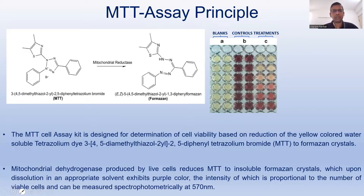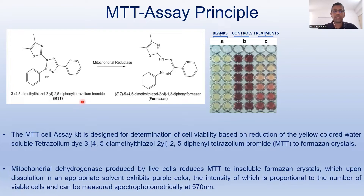Dead cells or unhealthy cells have unhealthy mitochondria, and as a result the mitochondrial enzymes will not be there to metabolize a substrate to its product. The substrate used for this assay is MTT — dimethyl thiozole diphenyl tetrazoleum bromide — which is a yellow-colored water-soluble dye.